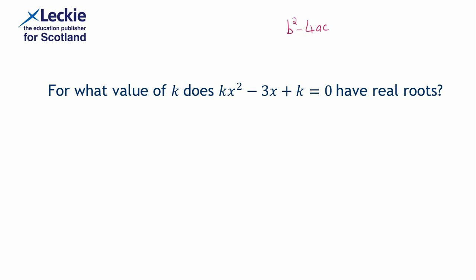So in this case, a would be k, that's the coefficient of x squared. b would be negative 3, so important to remember that negative is part of that coefficient, and c would be k.